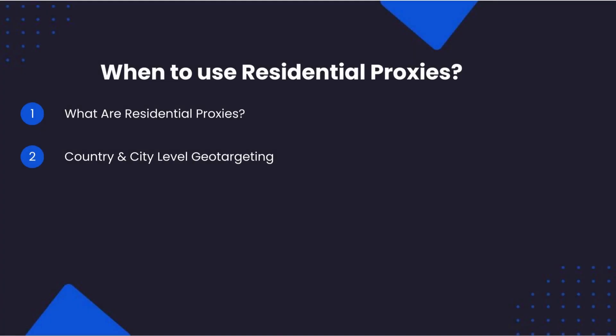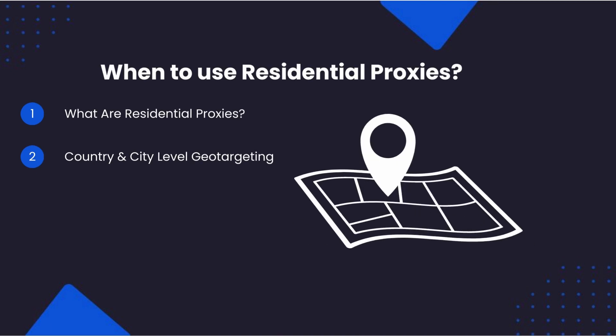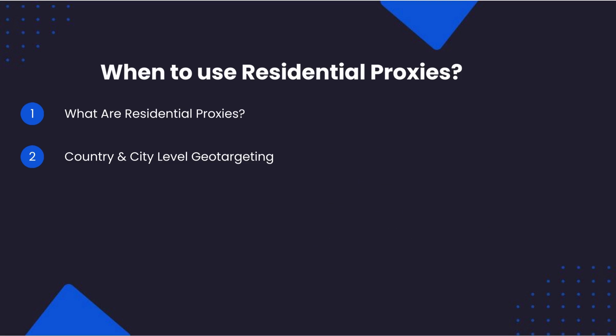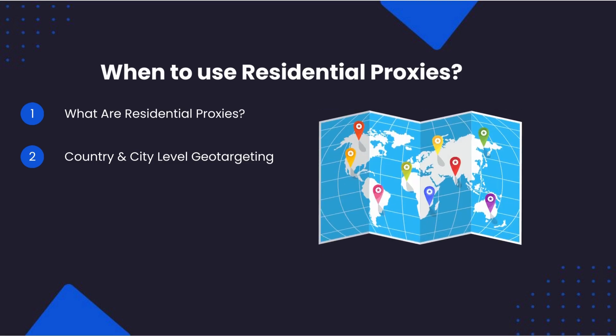Another advantage of using residential proxies is that they are great when you need to make your requests look like they are coming from a specific country, city, or even postcode — something that is very hard to achieve with data center proxies. Because residential proxies are real IP addresses in people's homes and businesses, they give a huge diversity in locations. As a result, some proxy providers, like BrightData, have been able to index all their residential IPs to specific countries and cities, and allow their users to decide from where their requests come from.